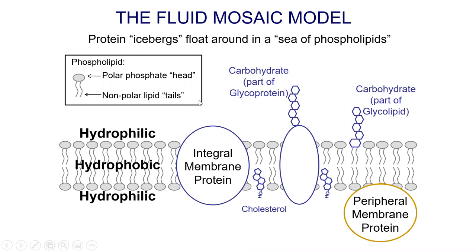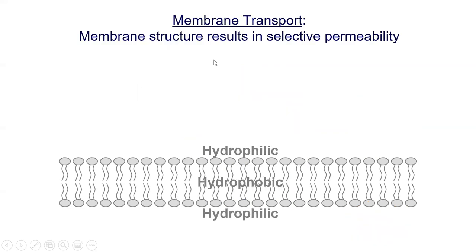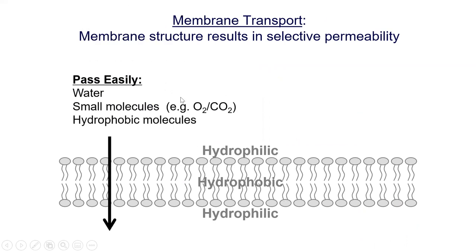That's a quick tour of membrane structure — there's good textbook information on phospholipids and cholesterol. Part B of this lecture is membrane transport. This membrane has hydrophobic and hydrophilic sections, meaning only certain things pass through the hydrophobic zone easily: water, small molecules, and hydrophobic molecules. Oxygen and carbon dioxide are both small and non-polar, so they pass through quite easily.